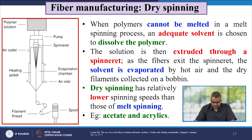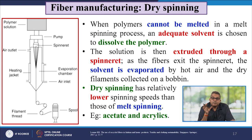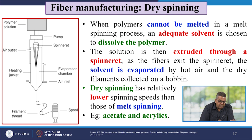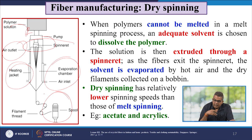When polymers cannot be melted, an adequate solvent is chosen to dissolve the polymer — that is dry spinning. The solution is extruded through a spinneret, and as the fibre exits the spinneret, the solvent evaporates. The dry filament is then collected on a bobbin. Dry spinning has a relatively low spinning speed compared to melt spinning. Examples of this category are acetate and acrylics.